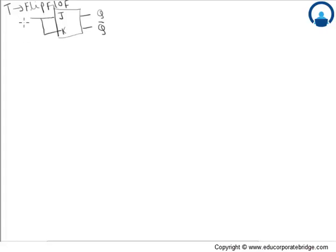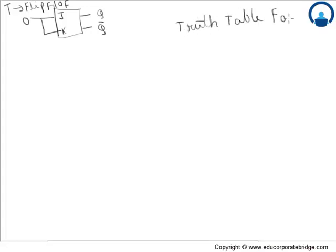If the input is 0, both J and K will be 0, so the output will be Q, which holds the previous value. For better understanding, let's look at the truth table for JK flip-flop. The inputs are: J=0 K=0, J=0 K=1, J=1 K=0, and J=1 K=1.